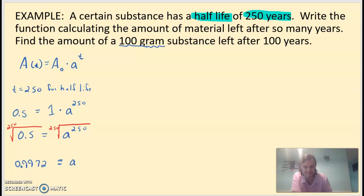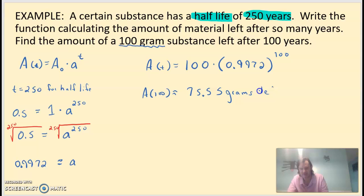Let's answer the second question. Let's first write our function. A(t) equals 100, if that's what we're going to start with, times 0.9972 raised to 100. That's the function that we're going to calculate. Starting with 100 grams, the rate at which it's changing, 0.9972, over a 100-year period of time. Let's calculate. Starting with 100 grams, there is 75.55 grams left after 100 years.